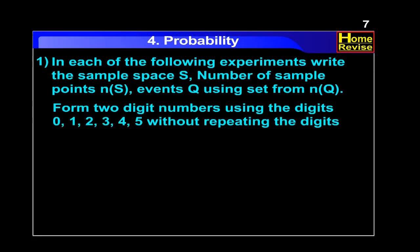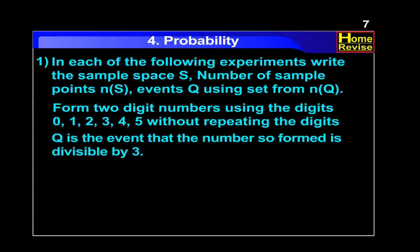Form two-digit numbers using the digits 0, 1, 2, 3, 4 and 5 without repeating the digits. Q is the event that the number so formed is divisible by 3.